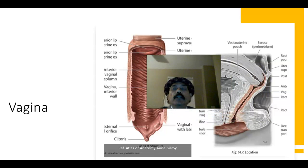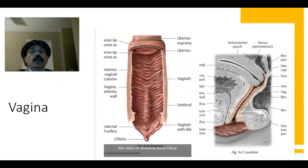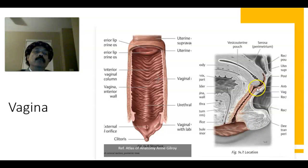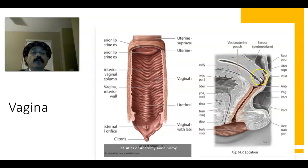Today I will discuss the histology of the vagina. The vagina is a fibromuscular tubular structure and an important part of the female reproductive system. It extends from the vestibule to the uterus, and the cervix of the uterus is protruded into the upper part of the vagina.